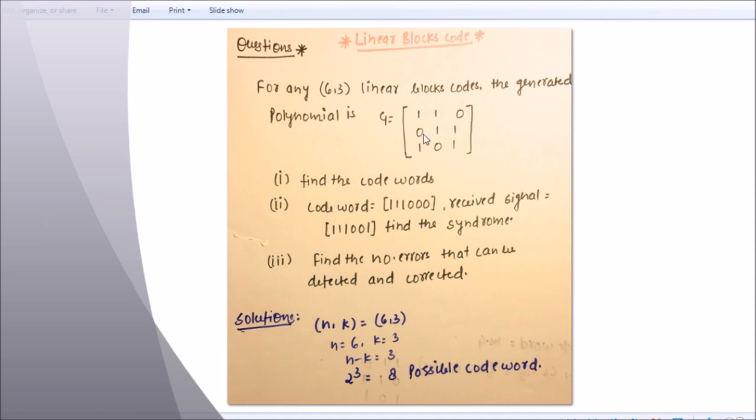A linear block code, here the question is: For any 6,3 linear block codes, the generator polynomial is g equals 110, 011, and 101. Here your g is given. Part (i): find the codewords. Part (ii): codeword equals 11100, received signal equals 111001, find the syndrome. Part (iii): find the number of errors that can be detected and corrected.